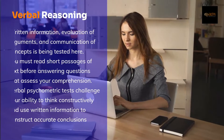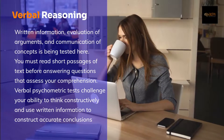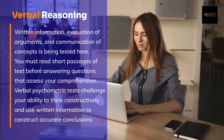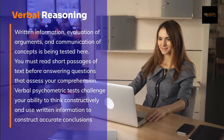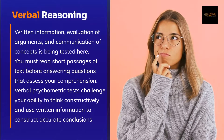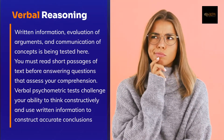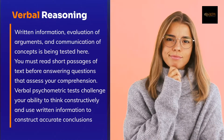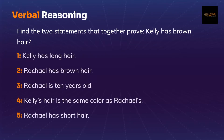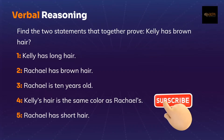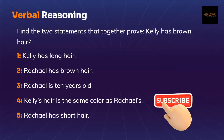Verbal reasoning tests your understanding of written information, evaluation of arguments, and communication of concepts. You must read short passages of text before answering questions that assess your comprehension. Verbal psychometric tests challenge your ability to think constructively and use written information to construct accurate conclusions. Some tests also assess your spelling and grammar. Here's an example: Find the two statements that together prove Kelly has brown hair. Statement 1: Kelly has long hair. Statement 2: Rachel has brown hair. Statement 3: Rachel is 10 years old. Statement 4: Kelly's hair is the same color as Rachel's. Statement 5: Rachel has short hair.